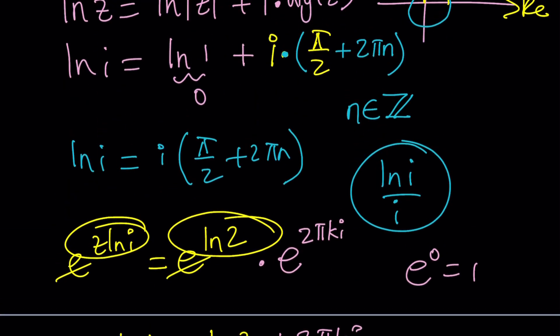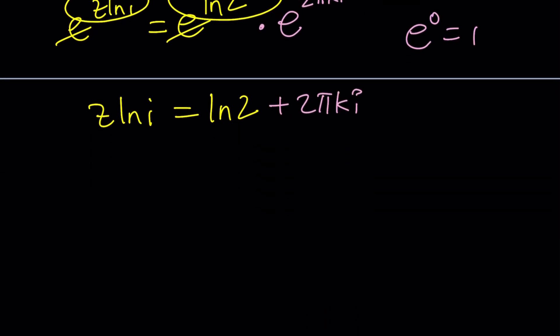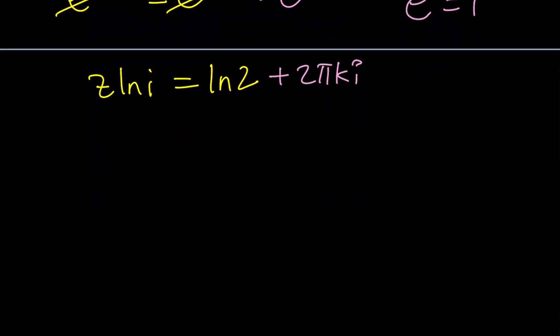Now, here's the thing, though. In using ln i, I already used an additional integer here. So, do I really need this type of thing? So, let's go ahead and find out what this is going to turn into.